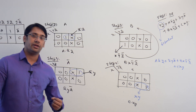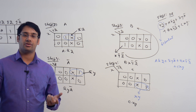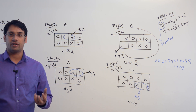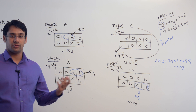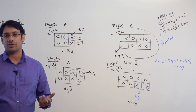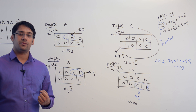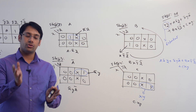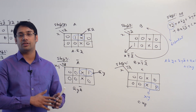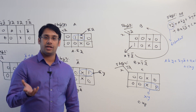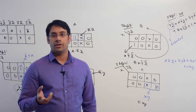Now let us start the combinational circuit. In the case of combinational circuits, we take the switching boolean expressions and implement them using gates — AND gate, OR gate, NAND gate, NOR gate, XOR, and XNOR gate.